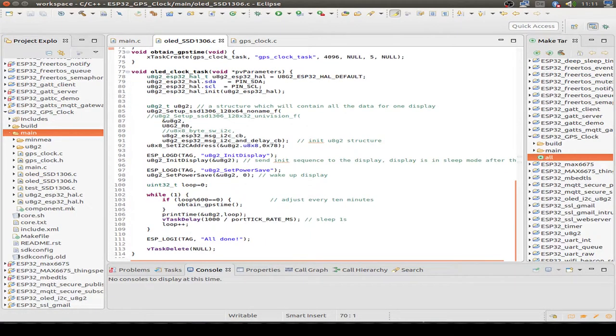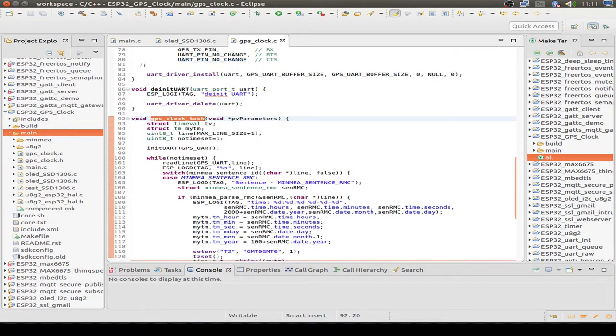Next we look at the GPS module functions. I use this obtain time and the obtain time creates a background task to set the local time of the ESP32. So we look into the GPS task.